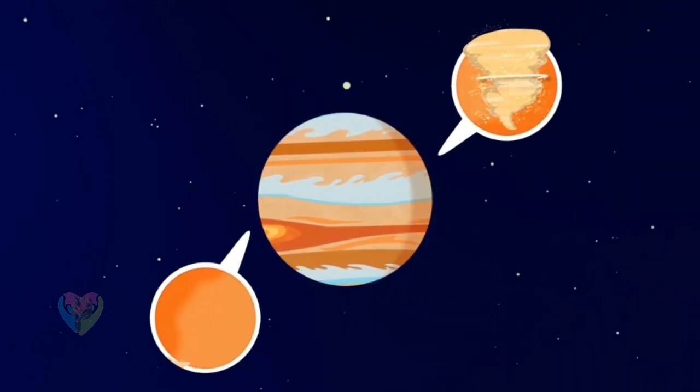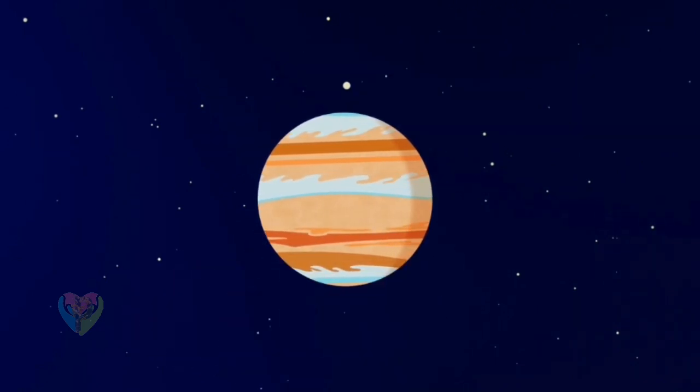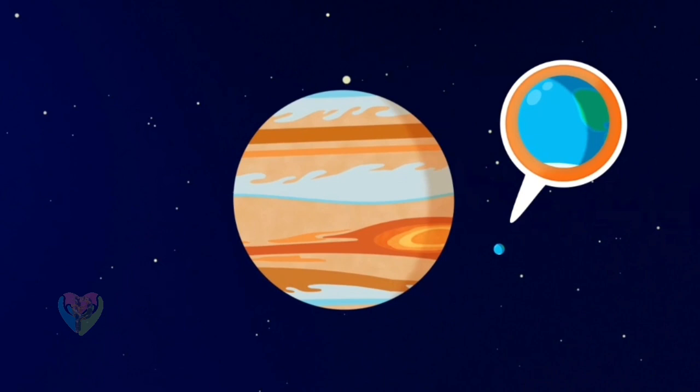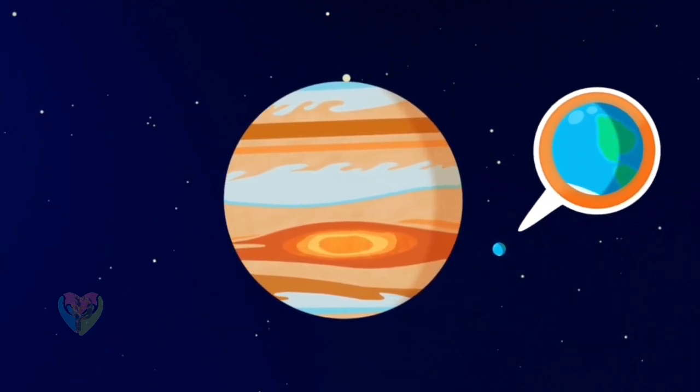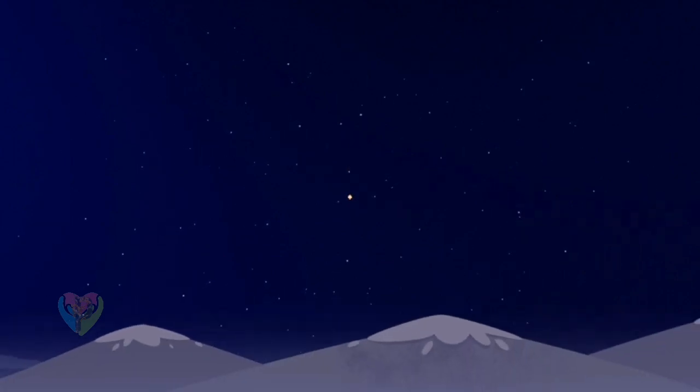This crazy speed causes different atmospheric phenomena, such as hurricanes and storms. One of these hurricanes is the big red spot. It is bigger than the Earth and has lasted for hundreds of years. That's Jupiter, bright and flustering.